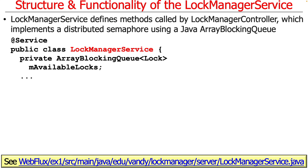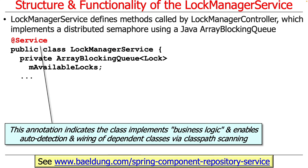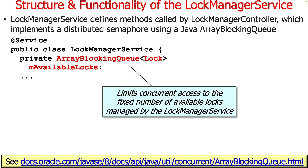The service starts out looking very much like before. The difference, however, is we don't have our own private executor anymore. We're going to leverage the bean facility in Spring to have the incoming requests automatically mapped to virtual threads. We annotate this with a service, and then we use our ArrayBlockingQueue to limit access to the available locks.